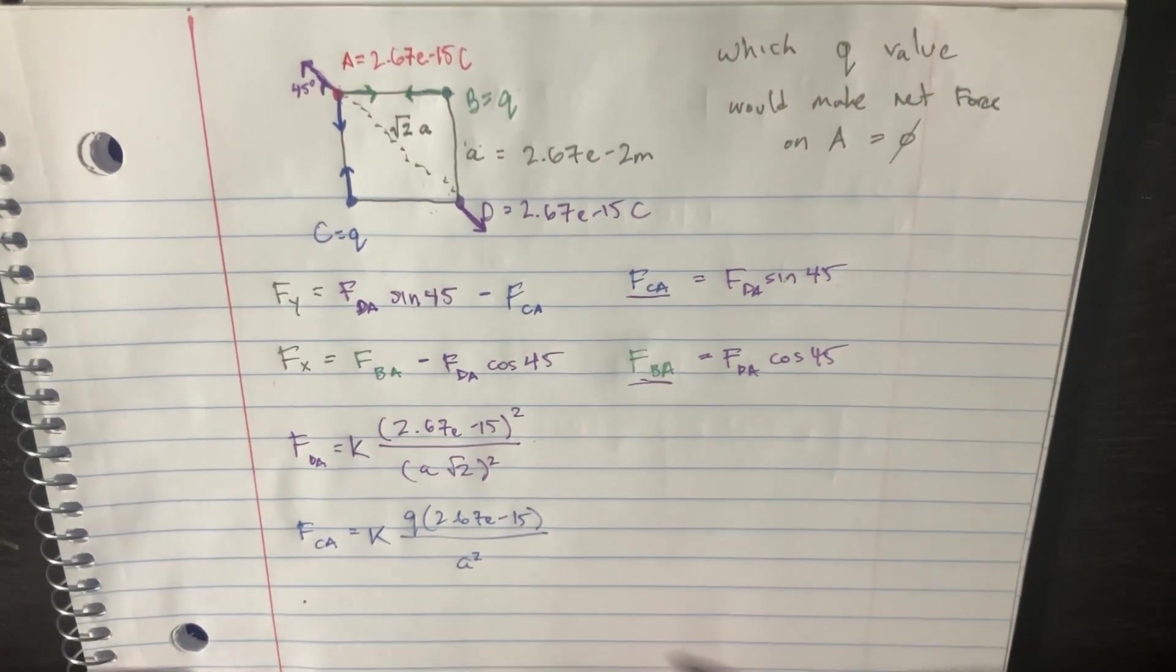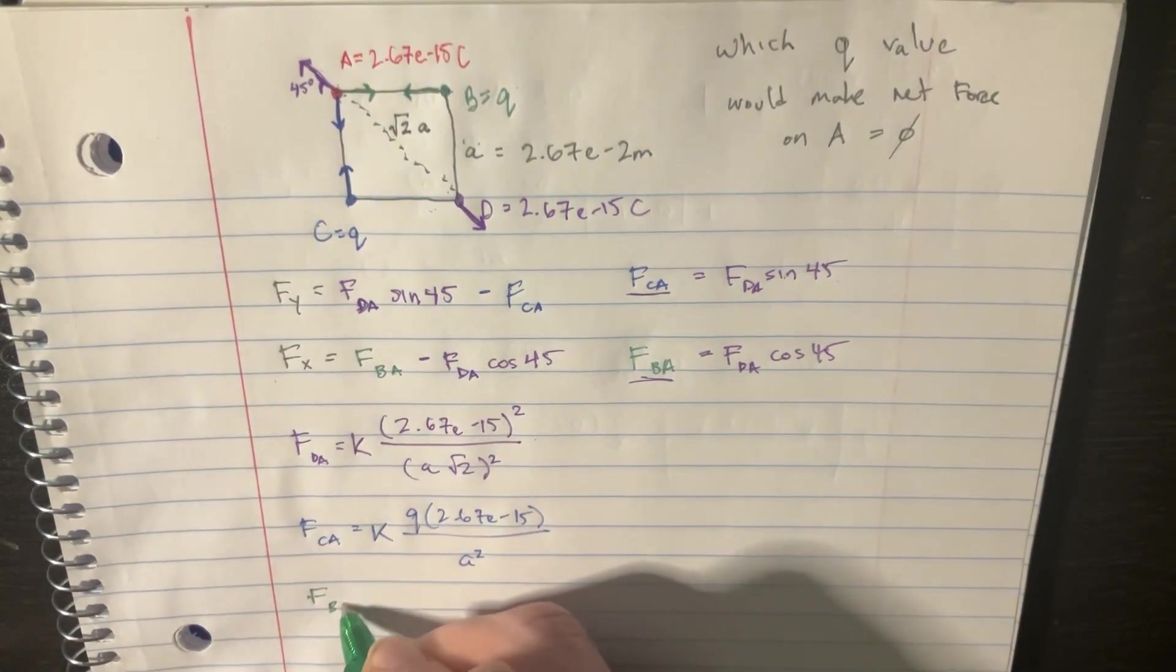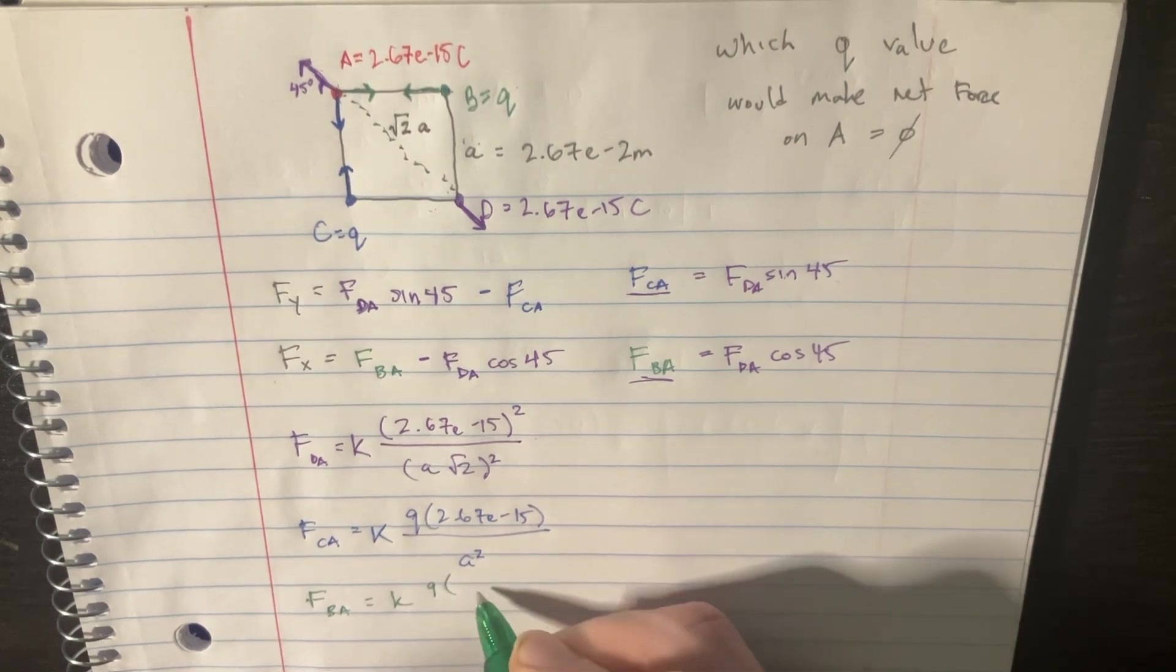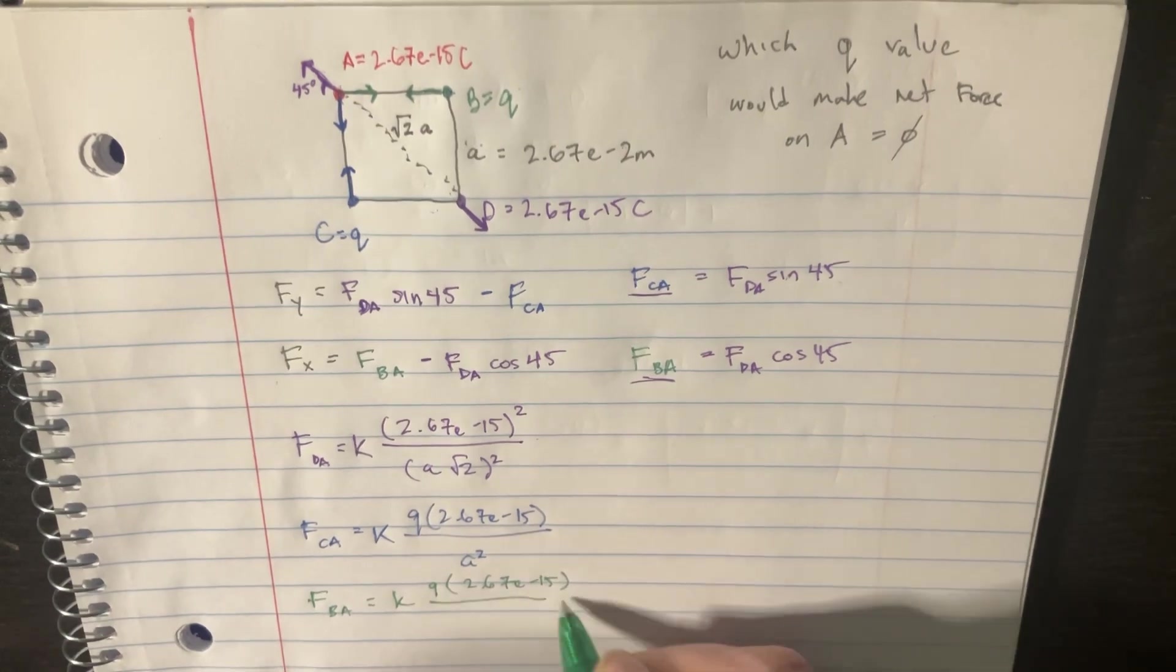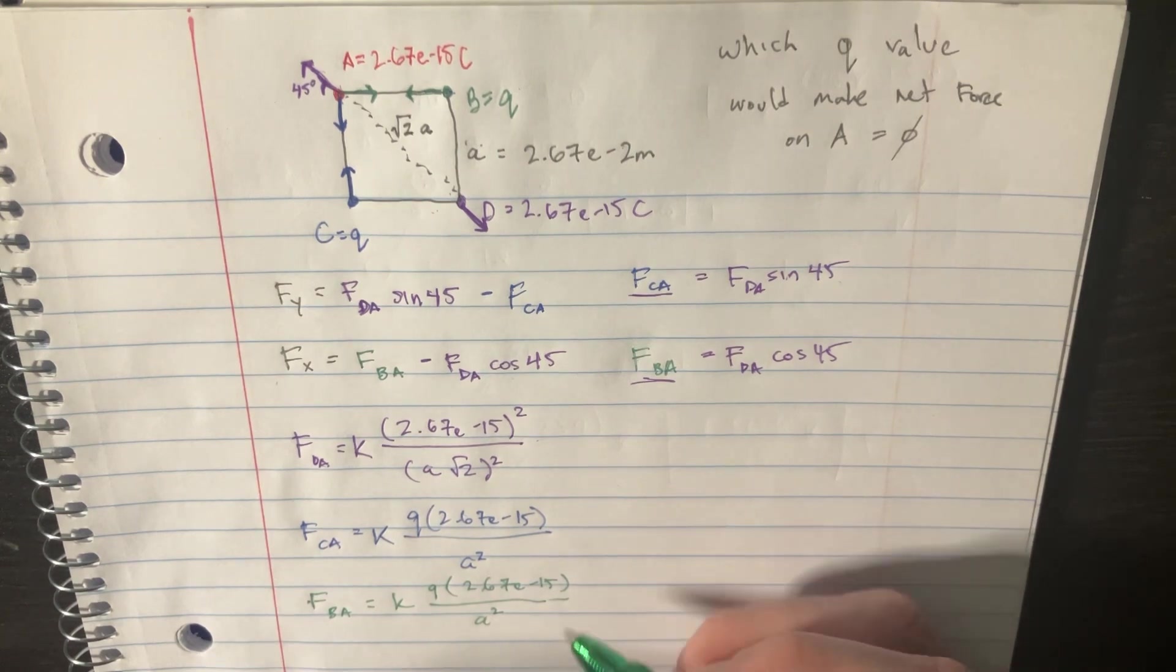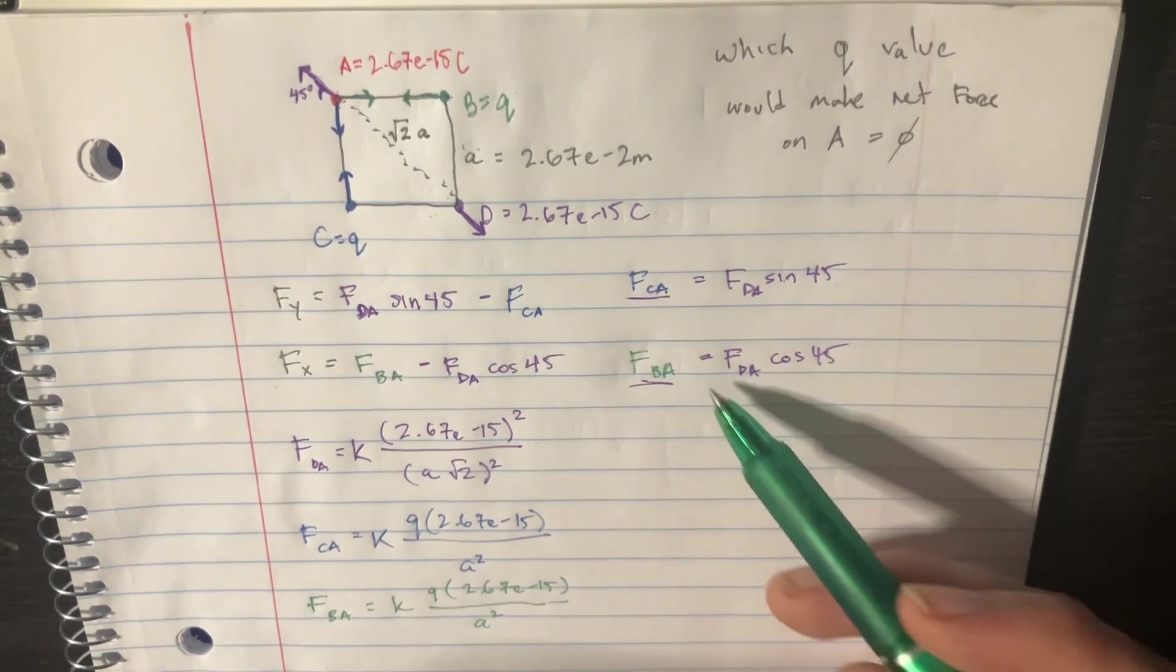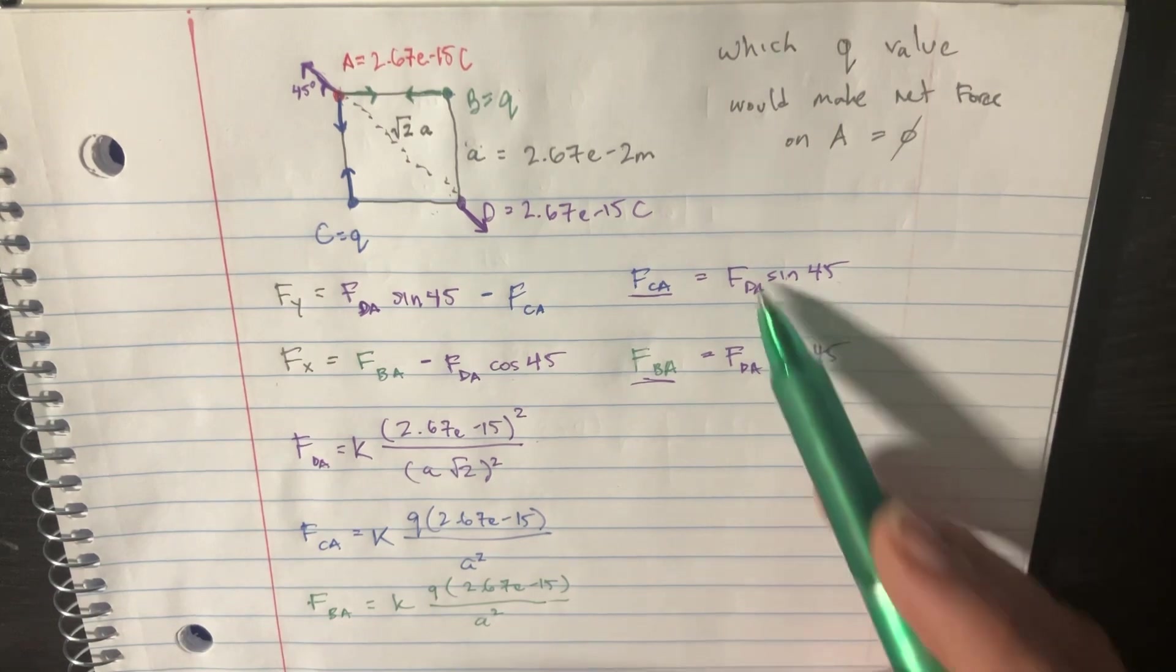This one is just going to be, if I can squeeze it in there, F B A, is equal to, very similar stuff, Q times 2.67 E to negative 15. I think it's the same, isn't it? Yeah. Okay, great. So those two are actually the same. And then we can just plug them into this.